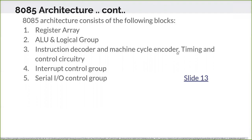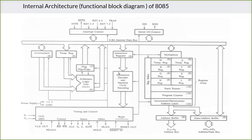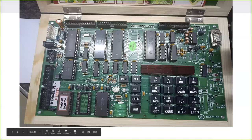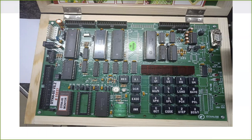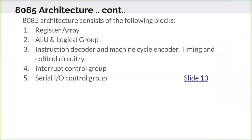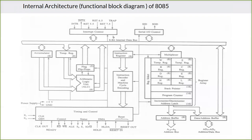Next is the instruction decoder and machine cycle encoder, along with timing and control circuitry. The instruction decoder works like this: when you enter a hex code, it is converted into the respective binary code, and the decoder understands what is mentioned — whether it is MOV A, B or ADD A. So the instruction decoder decodes the machine code and understands what has to be done. The machine cycle encoder executes the particular instruction, and timing and control signals ensure everything executes synchronously. Then there is the interrupt control group and the serial I/O control group.